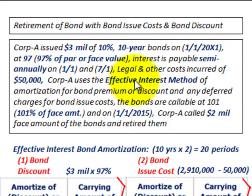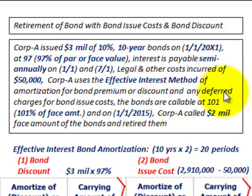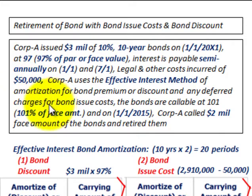Corporation A uses the effective interest method for amortization of any bond premium or discount and any deferred charges. When we're talking about deferred charges, that would be those issue costs.